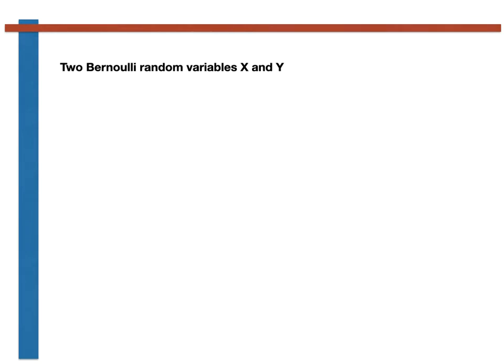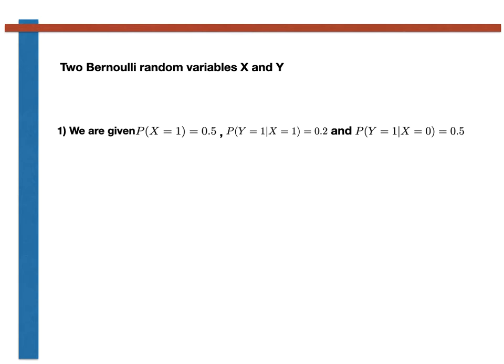Let's start by considering the problems that we have used Bayes' theorem to solve thus far. In these problems, there are generally two Bernoulli random variables, capital X and capital Y. In the statement of the problem, you are given the probability that X equals 1, the conditional probability that Y equals 1 given X equals 1, and the conditional probability that Y equals 1 given X equals 0. Because X and Y are Bernoulli random variables, you can also compute the probability that X equals 0, the conditional probability that Y equals 0 given X equals 1, and the conditional probability that Y equals 0 given X equals 0 — all just 1 minus the given terms.